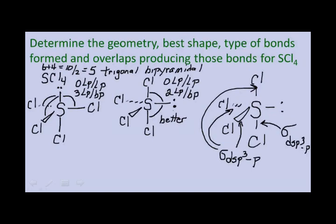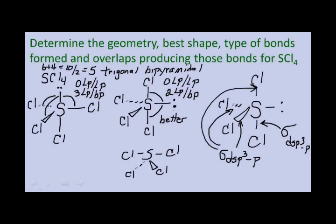What is the actual shape of this molecule? We have a chlorine bonded to a sulfur bonded to a chlorine, then the sulfur is bonded on the flying wedge to another chlorine and on the dotted wedge to another. Do you see what that gives you? It's a seesaw shape.